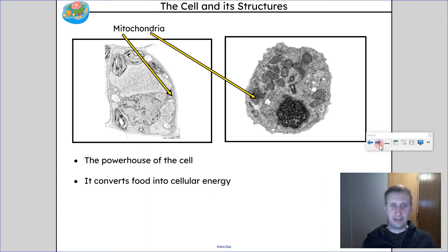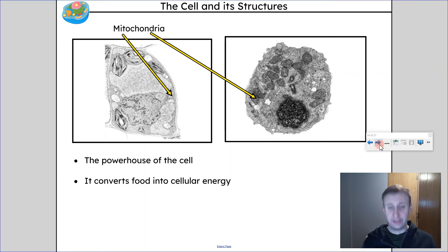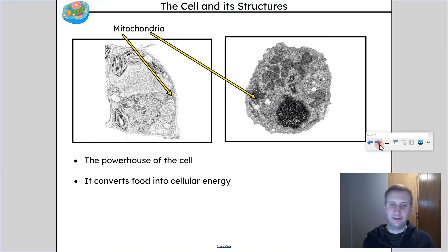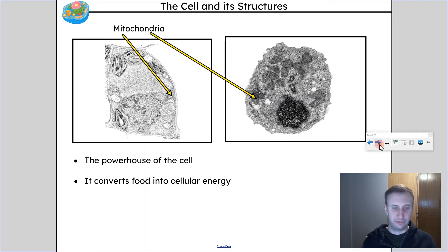Mitochondria is the powerhouse of the cell. It kind of looks like a weird jelly bean, and mitochondria is where cellular respiration occurs. This is where sugars react with oxygen to make carbon dioxide, water, and cellular energy — energy called ATP that can actually be used by other organelles in the cell. Mitochondria is super interesting in that it used to actually be its own independent cell that got incorporated into cells. Your mitochondrial DNA will be the exact same as your mom's mitochondrial DNA because there's actually DNA inside the mitochondria itself.